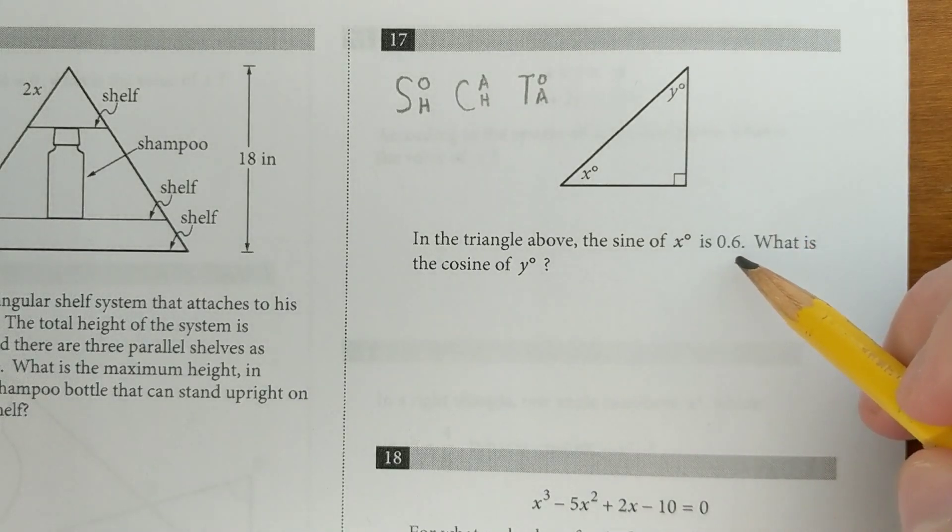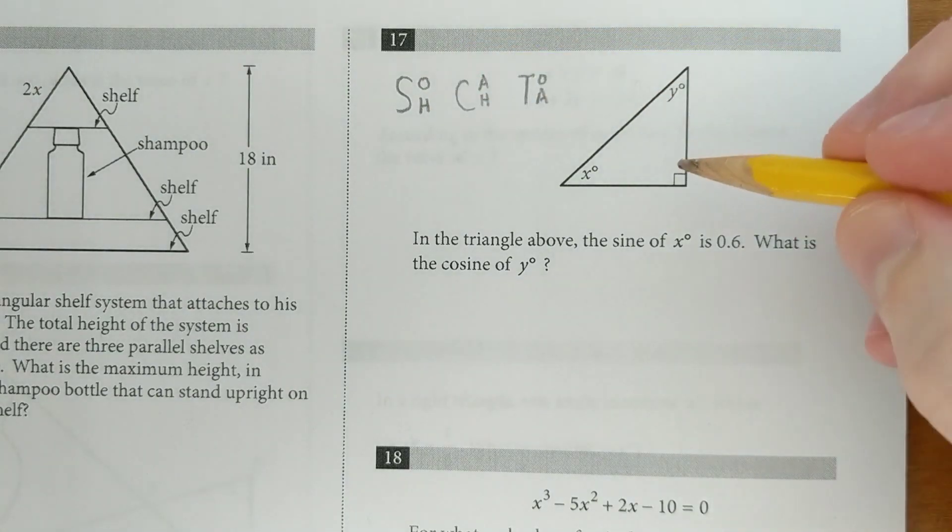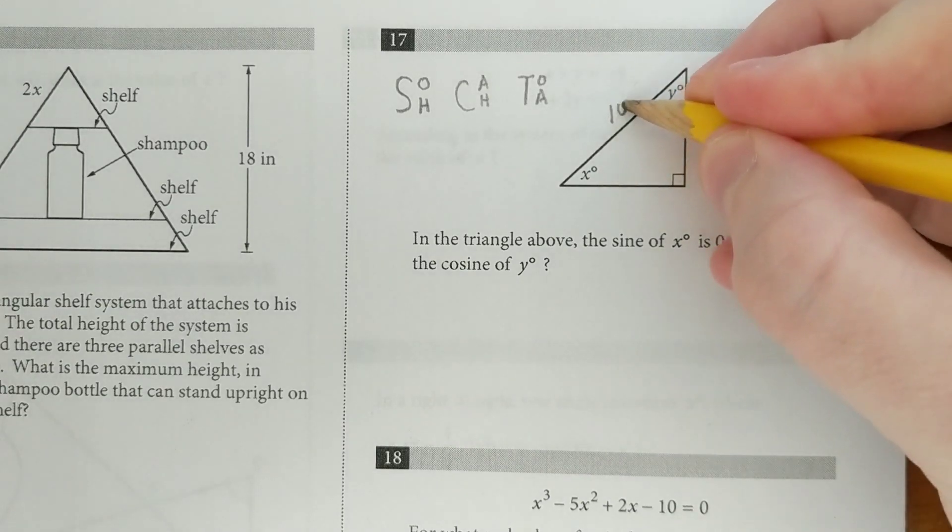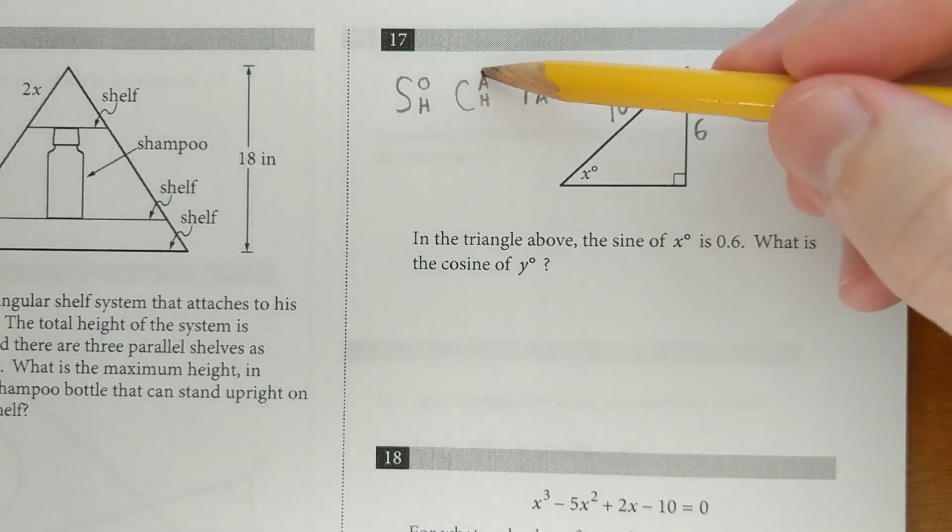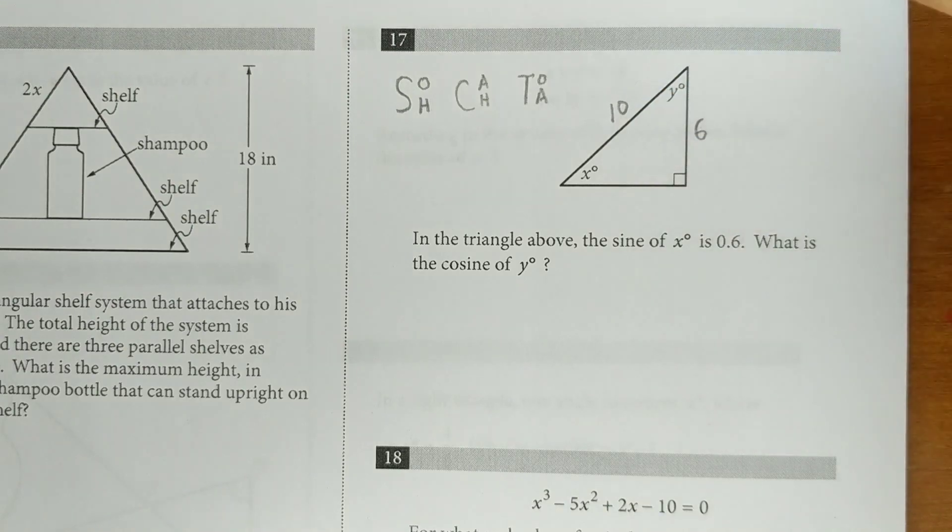In this question, the sine of x is 6 tenths, and they want to know the cosine of y. Now remember, sine is opposite over hypotenuse, so if the sine of x is 6 tenths, we could say that this is 6 and that's 10. And cosine is adjacent over hypotenuse, so the cosine of y would also be 6 tenths, because the adjacent is 6 and the hypotenuse is 10.